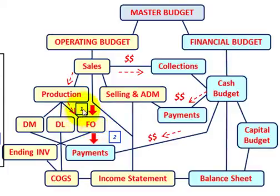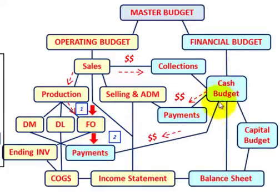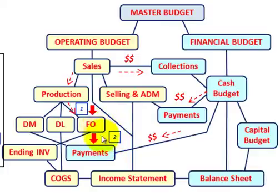First, we need to determine the factory overhead costs. Then, based on those factory overhead costs, we can determine the cash payments we have to make for factory overhead. Those cash payments are tied into the cash budget under the financial budget. So those are the two things: the budgeted factory overhead costs, and then the cash payments we have to make for factory overhead.